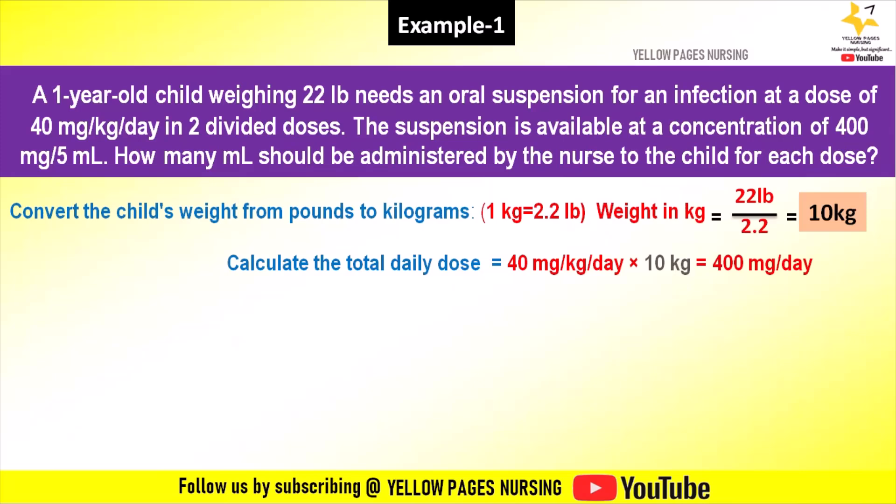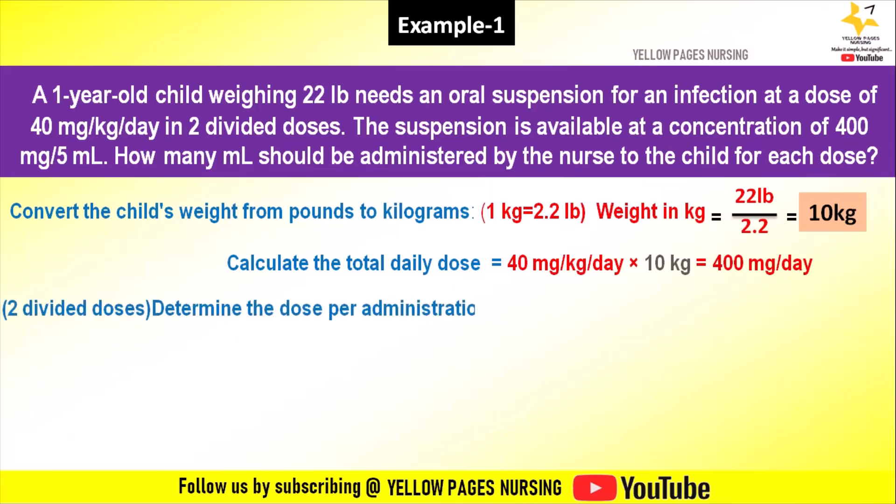This gives 400 mg per day. But as mentioned in the example, the drug should be given in two divided doses, so we have to determine the dose per administration. We divide the total daily dose by 2: 400 mg per day ÷ 2 = 200 mg per dose.